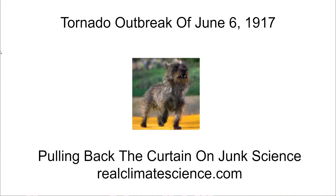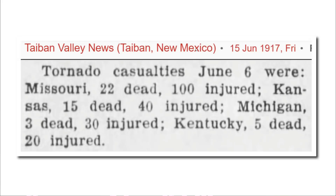There was a massive tornado outbreak on this date in 1917. Here's a newspaper article from the 15th of June, 1917. Tornado casualties June 6: Missouri — 22 dead, 100 injured; Kansas — 15 dead, 40 injured; Michigan — 3 dead, 30 injured; Kentucky — 5 dead, 20 injured. Winfield Daily Courier, Winfield, Kansas, Wednesday, June 6, 1917.